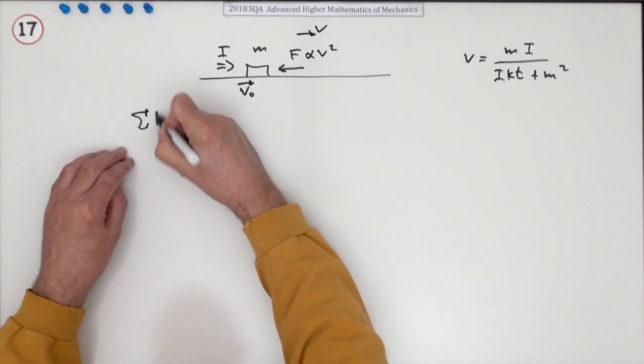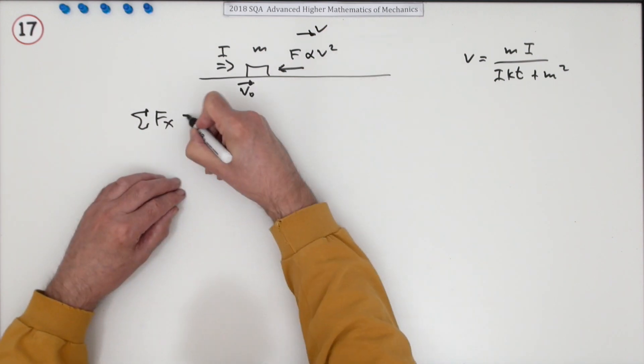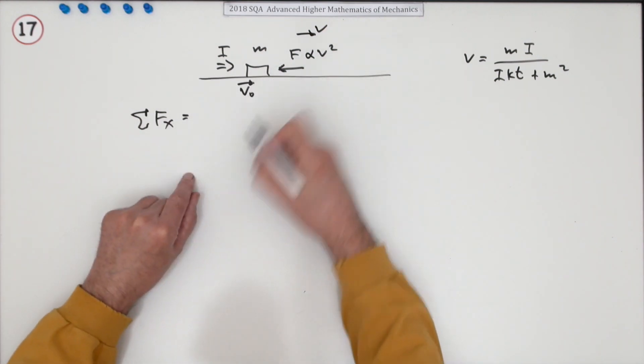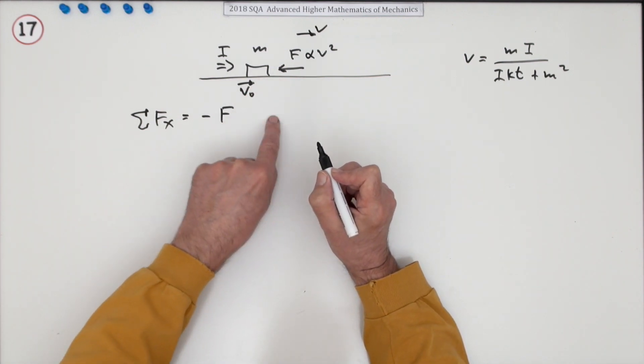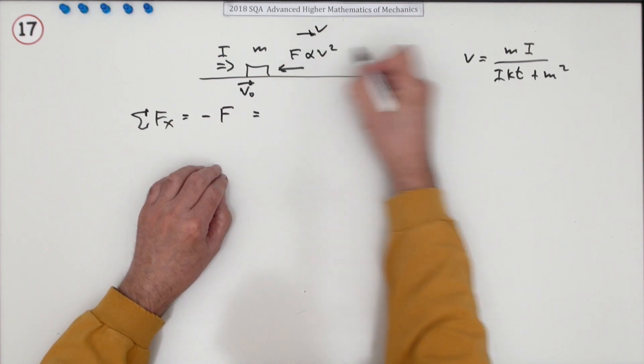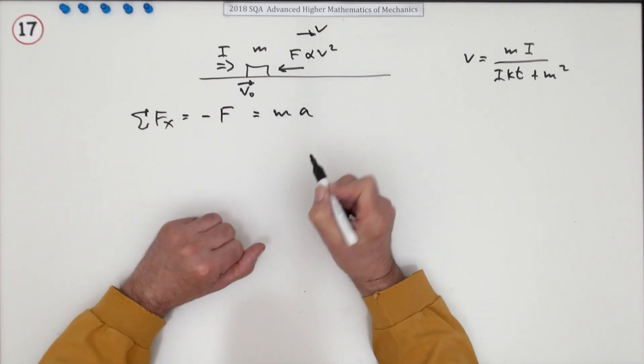What are the sum of the forces? Well, there's only one. There's that force of friction, so that's a negative F, that resistive force. Since it's unbalanced, it's not equal to zero, it's going to result in an acceleration, so that will equal MA.